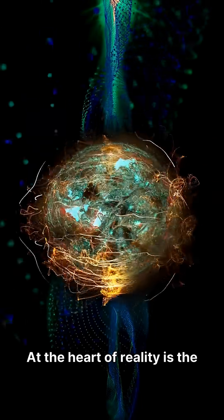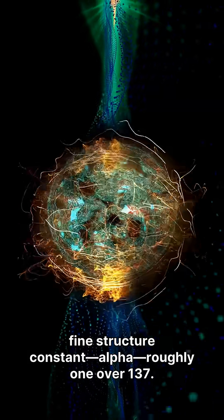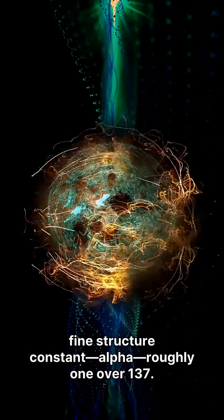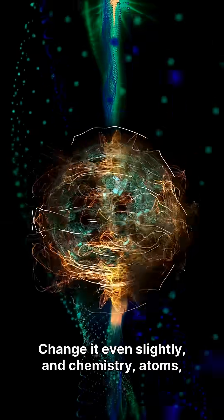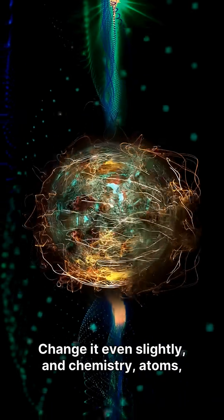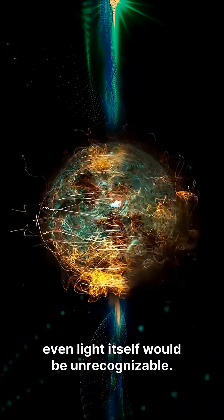At the heart of reality is the fine structure constant, alpha, roughly 1 over 137. It controls how light and matter interact. Change it even slightly, and chemistry, atoms, even light itself would be unrecognizable.